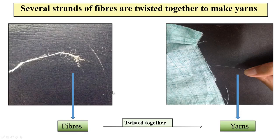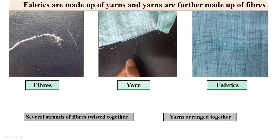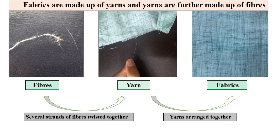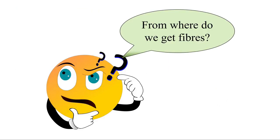So now we understand that fabrics are made up of yarns, and yarns are further made up of fibers. In other words, several strands of fibers are twisted together to make yarns, and yarns are arranged together to make fabrics. The next question is: where do we get fibers from?